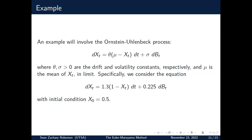So specifically, we'll consider this specific example here. So we'll choose theta to be 1.3, mu to be 1, and sigma to be 0.225. And we'll have an initial condition where, at time 0, our process takes the value 0.5 with probability 1.